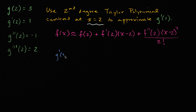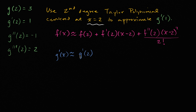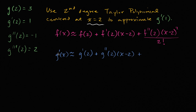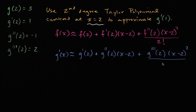So g prime of x is what we're going to try to approximate, and then we'll evaluate it at x equals one. G prime of x is approximately equal to: the function we're approximating evaluated at two, which is g prime of two; plus the first derivative of g prime — which is the second derivative of g — so g double prime of two times x minus two; plus the second derivative of g prime — which is the third derivative of g — so g triple prime of two times x minus two squared, all over two factorial.